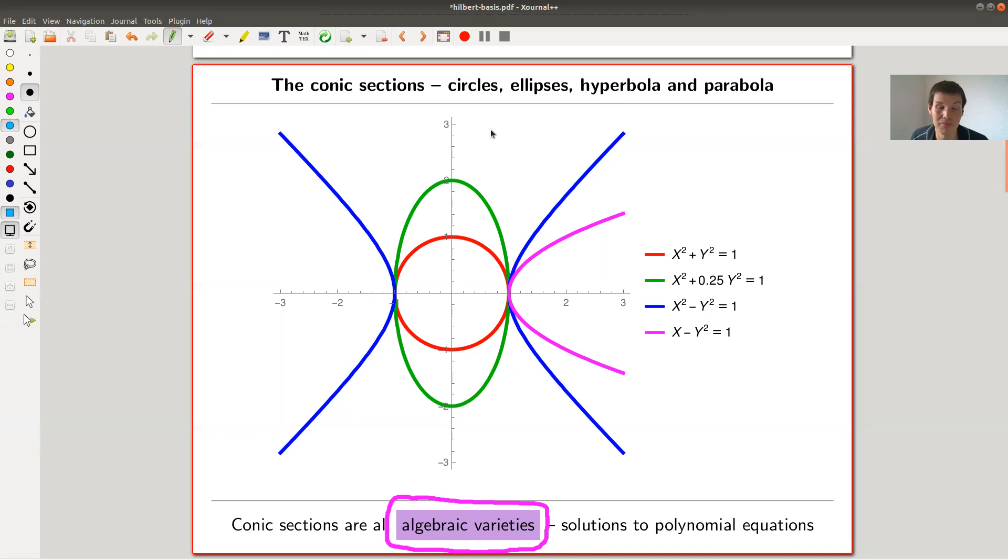And this is really a classic, a really classical topic in mathematics. So the most, well, maybe the first ever studied geometric objects, something like those guys here, right, circles. The circle was certainly an object to study for a very long time. All of these fall in this class of algebraic varieties.